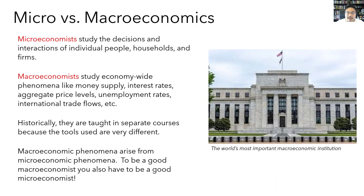The distinction between micro and macro is getting fuzzier. Because today our computers are much more powerful, macroeconomists are increasingly able to build models that do take into account individual decision-makers, explicitly modeling how the separate decisions of many different individuals together give rise to economy-wide phenomena. So to be a good macroeconomist, you would also need a strong foundation in microeconomics. For this reason, most people are required to take microeconomics before they can take macroeconomics.